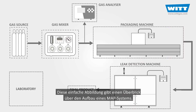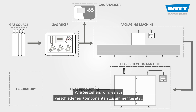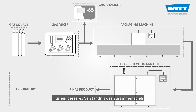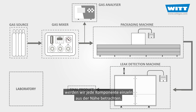This simple schematic gives an overview of the structure of a MAP system. As you can see, it's composed of different parts. To better understand this structure, let's focus on each part of this system one by one.